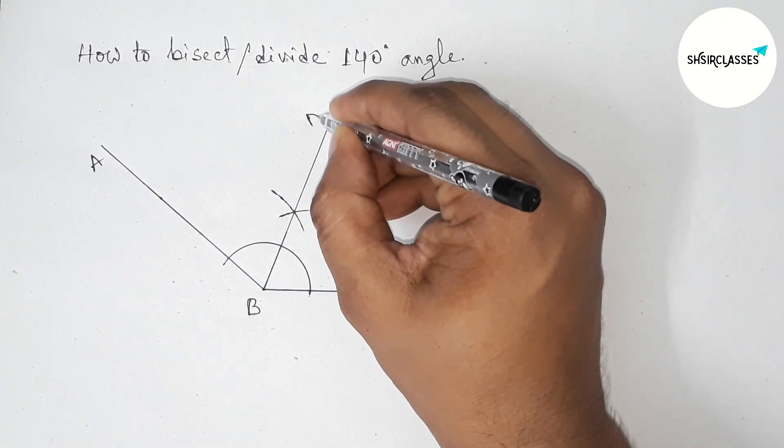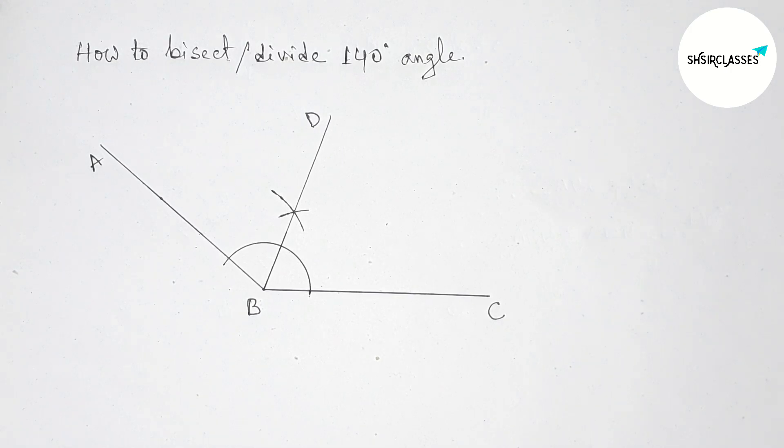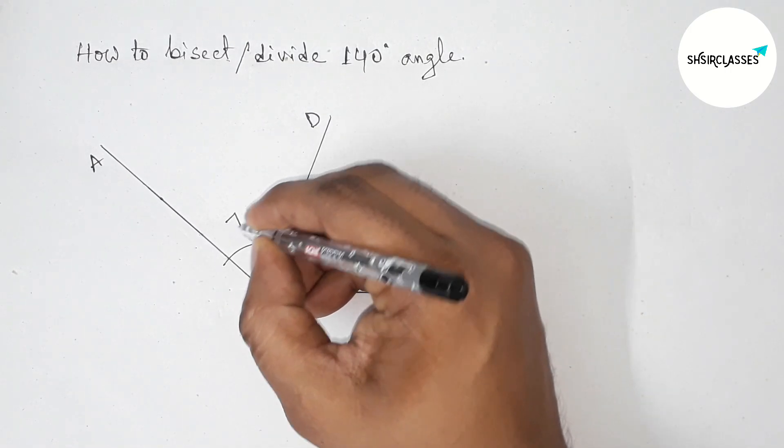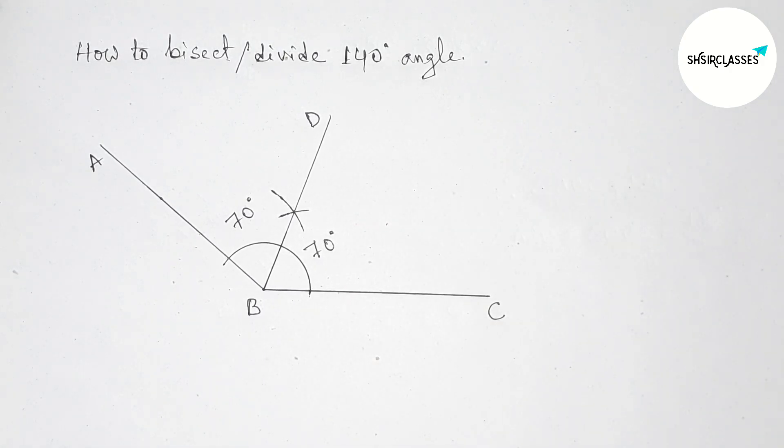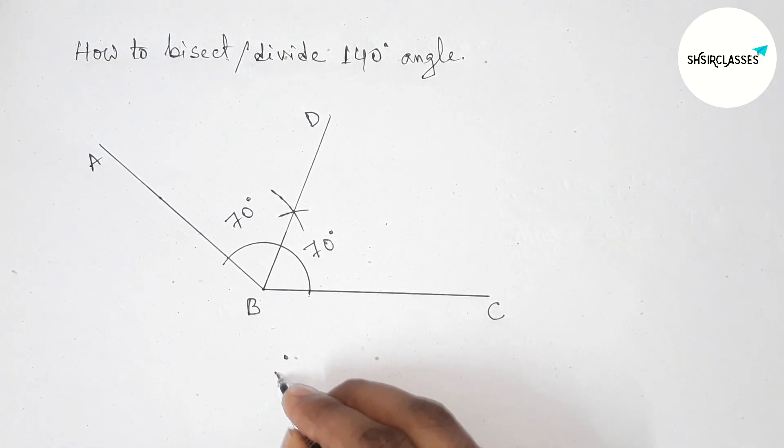And now angle this is 70 degree and this one also 70 degree. Okay, so therefore now angle ABC...